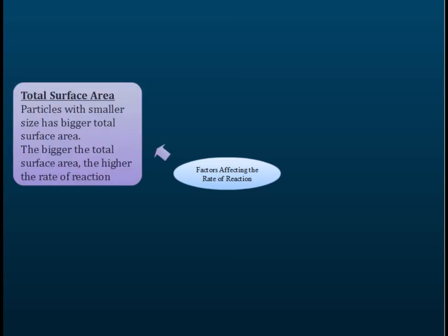Factors affecting the rate of reactions. The first one is the total surface area, and this is related to the size of the particles. A particle with smaller size has bigger total surface area. The bigger the total surface area, the higher the rate of reactions. Higher rate of reactions means that the reactions become faster. Rate of reaction is a measure of how fast the reactions occur.